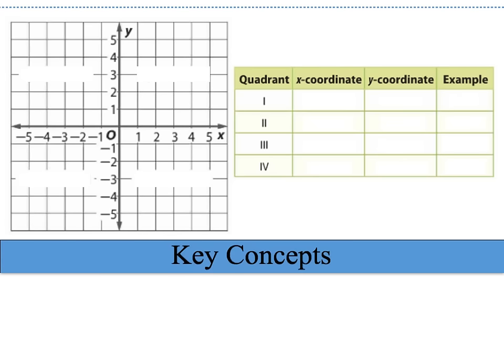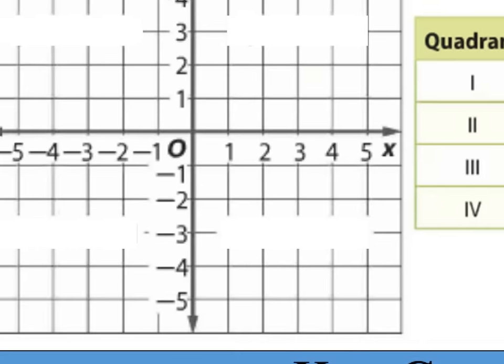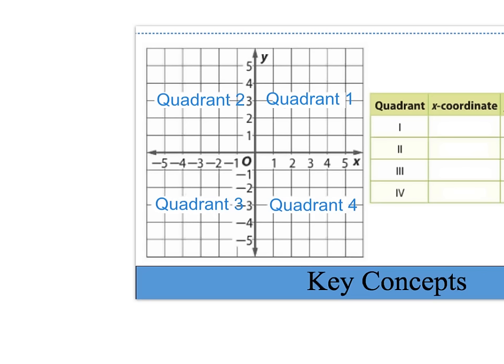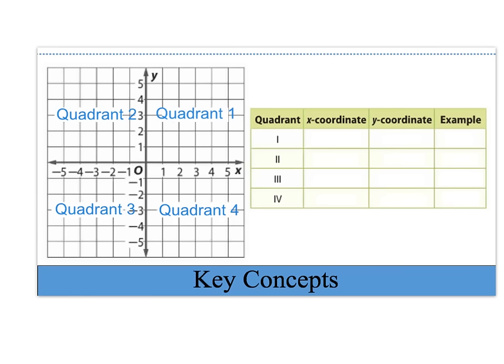Let's talk about some key concepts. Looking at our coordinate plane, we have four regions. Our first region is quadrant 1, and notice we're going counterclockwise. In quadrant 1, the x-axis has positive numbers and the y-axis also has positive numbers, so your ordered pairs would both be positive.